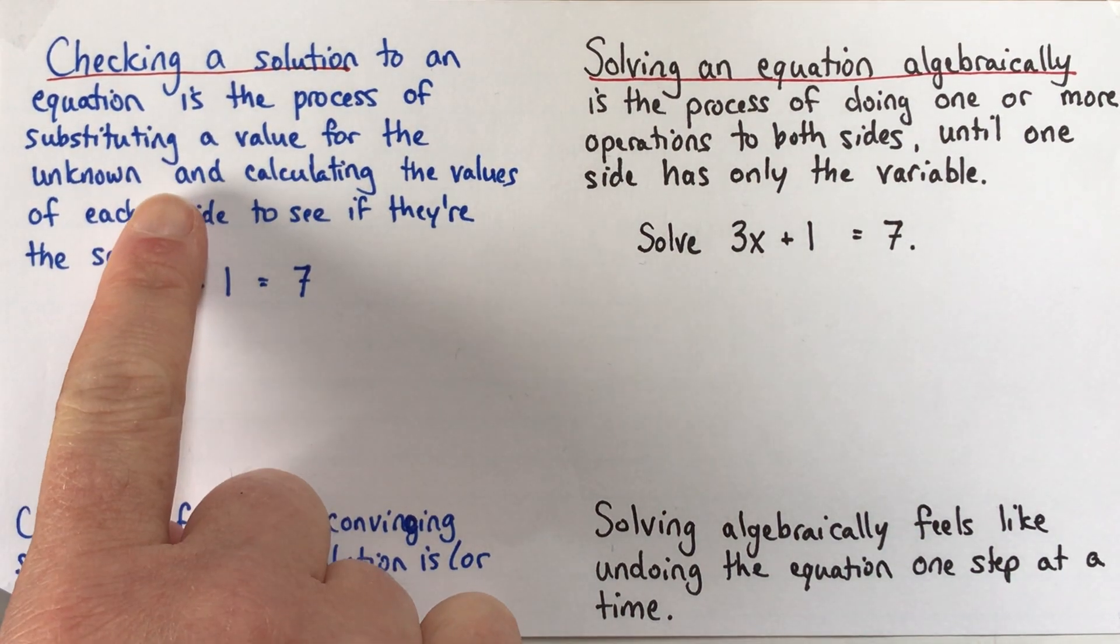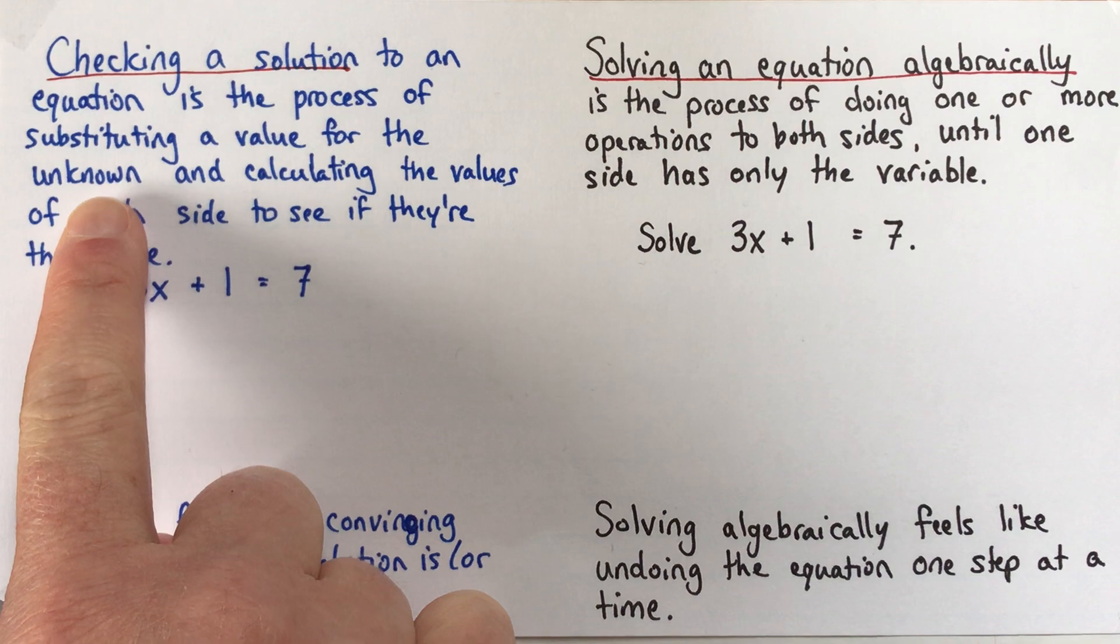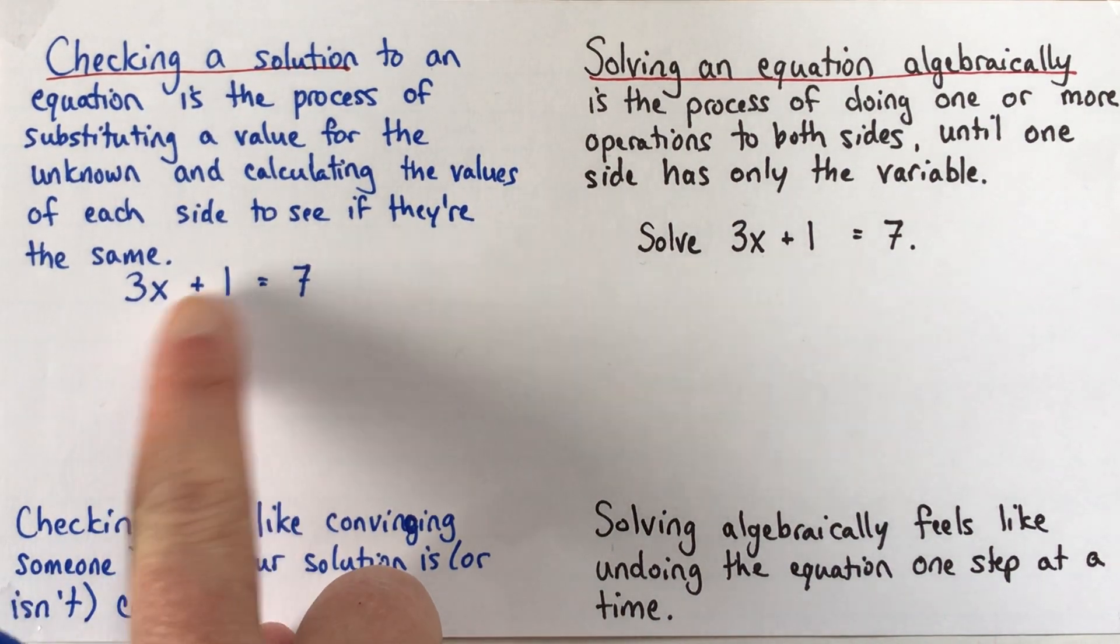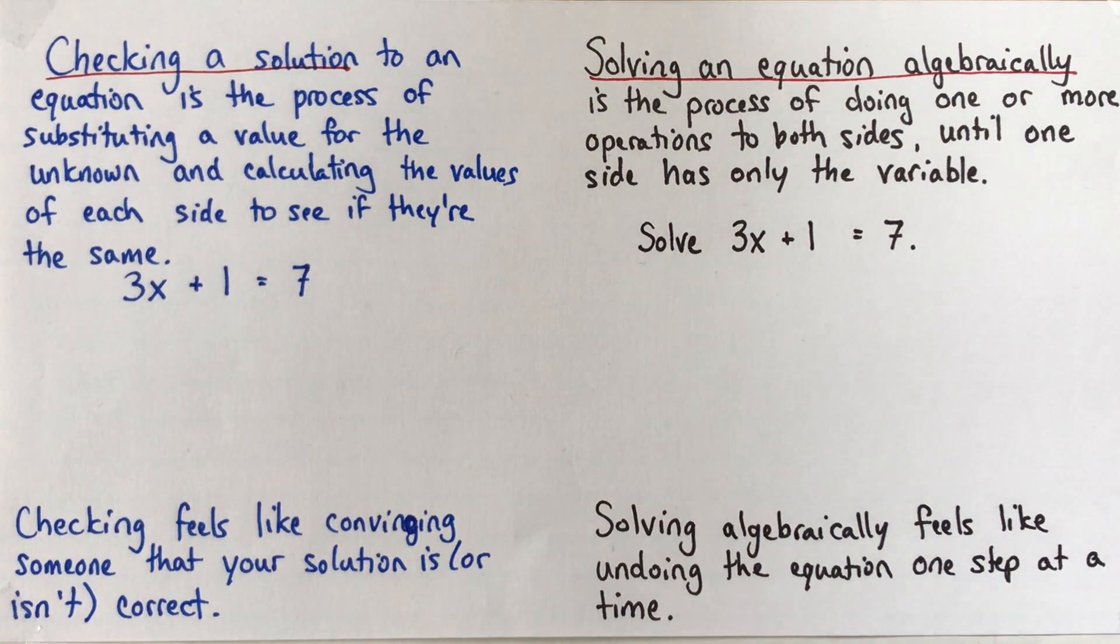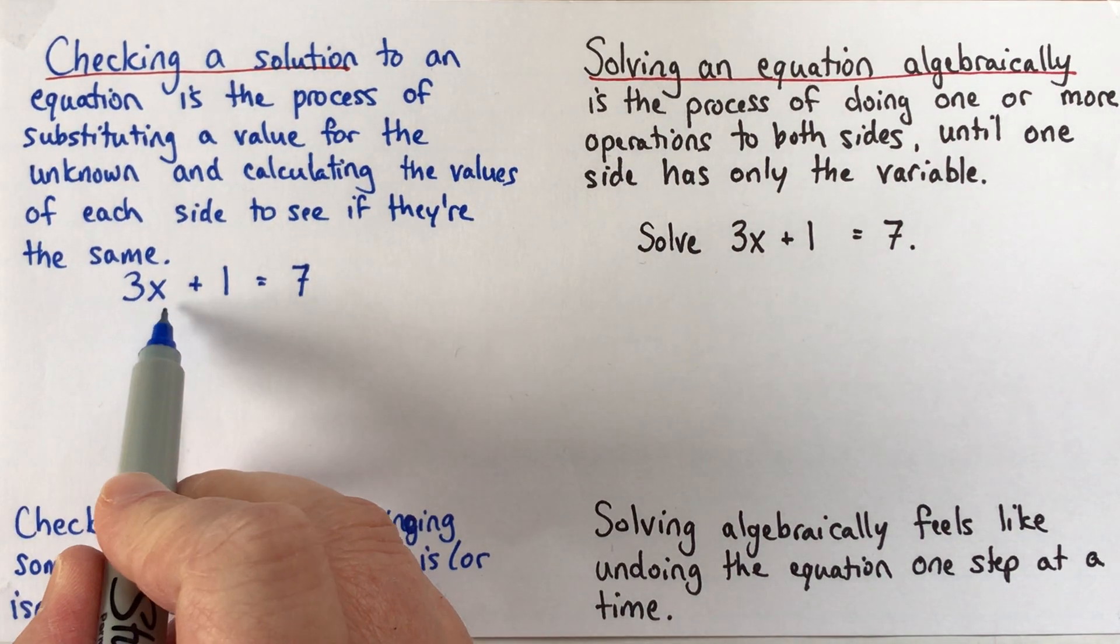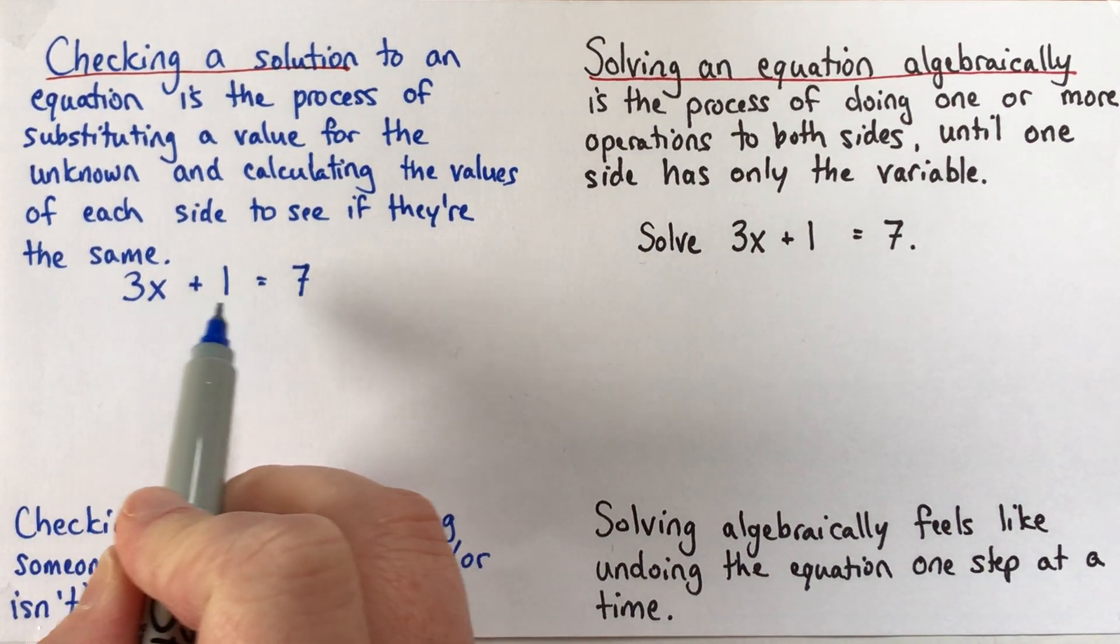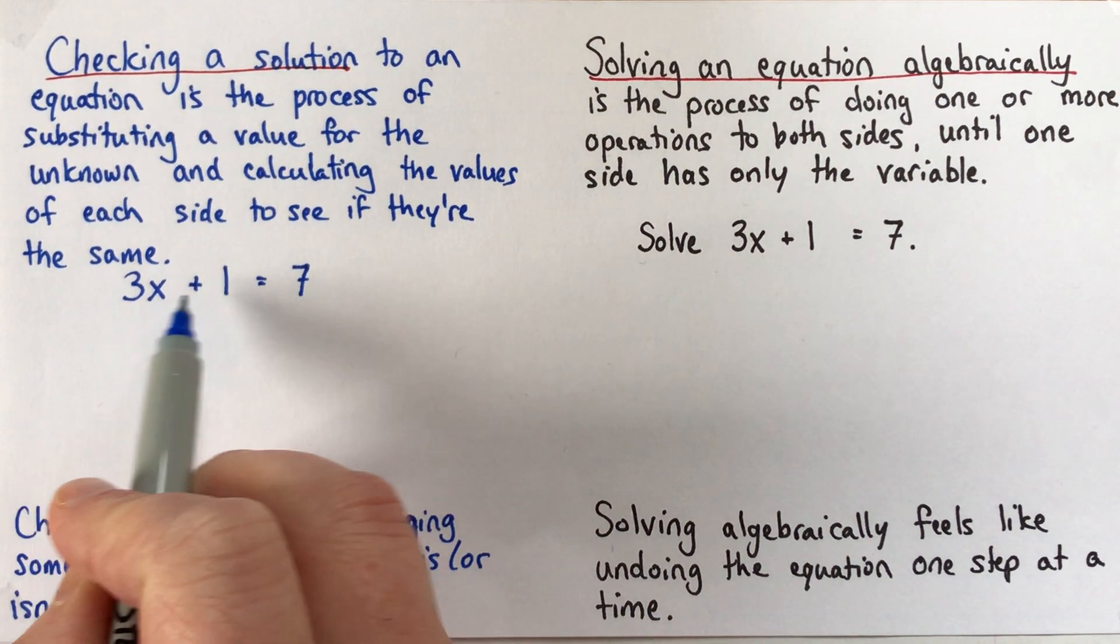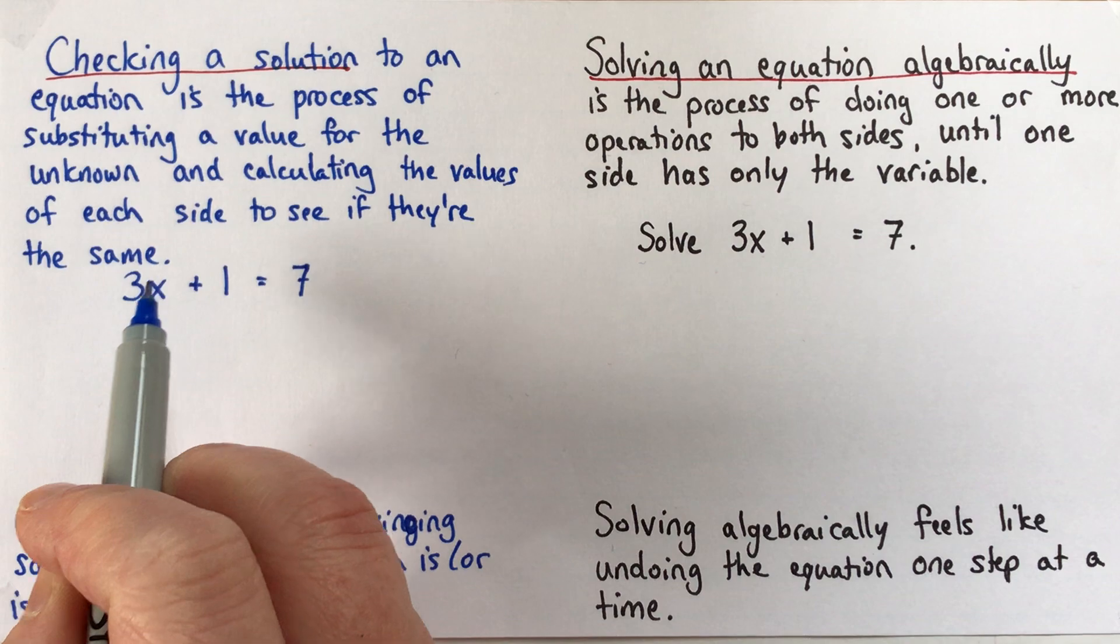So checking a solution is the process of substituting a value for an unknown and calculating the values of each side to see if they're the same. Alright, so I'll show you an example here. Sometimes people might be asked to solve this equation here, and they're looking at this and they're saying, OK, 3x plus 1 is 7, so that means 3x is 6, so that means x is 2. Alright?